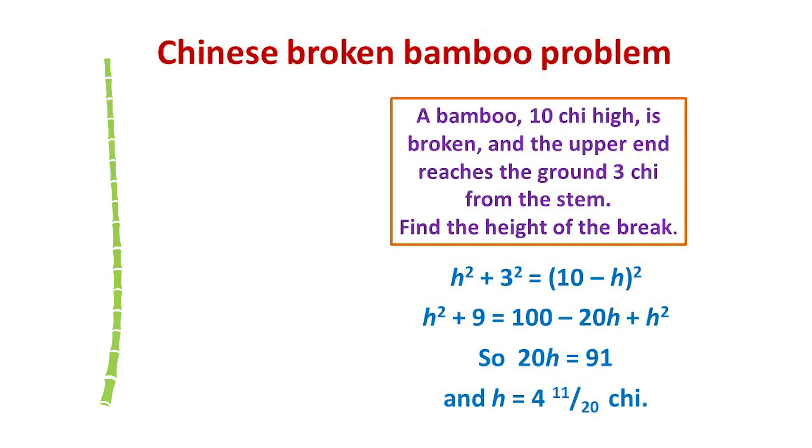The ancient Chinese were also familiar with the result, as illustrated by their broken bamboo problem shown here. A bamboo, 10 chi high, is broken, and the upper end reaches the ground, 3 chi from the stem. Find the height of the break.